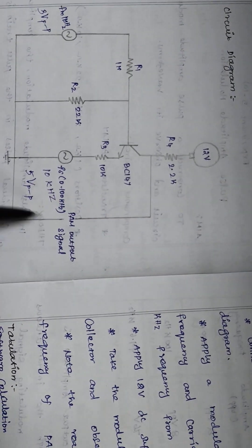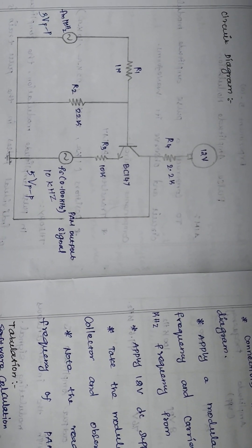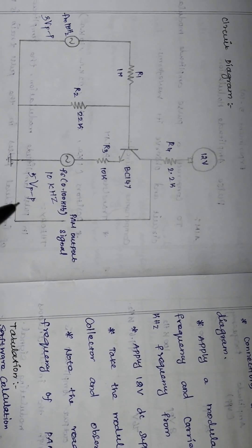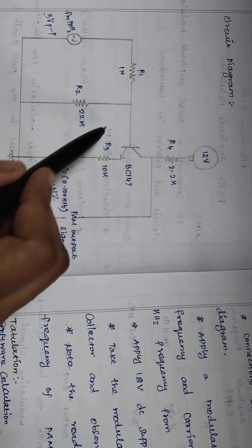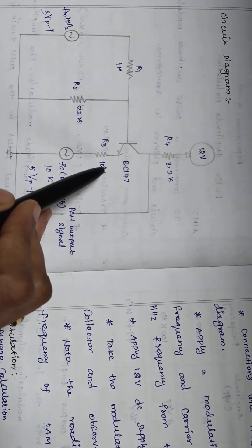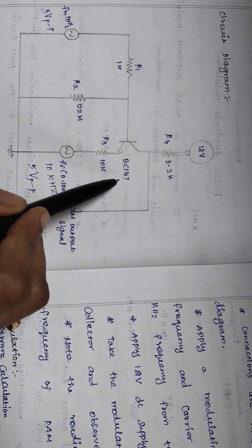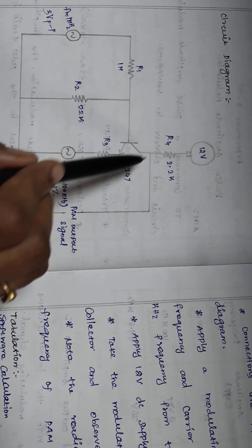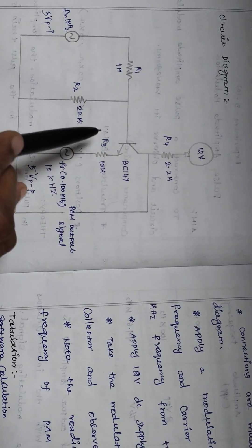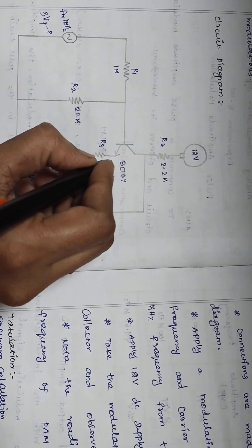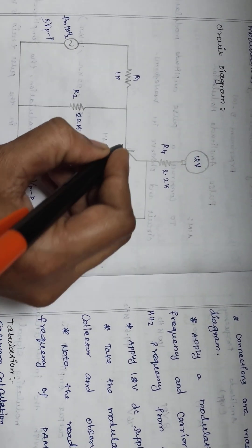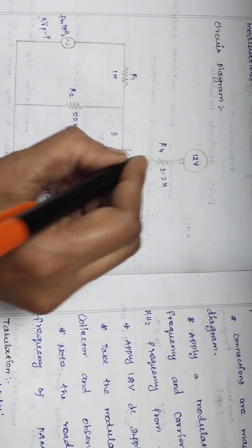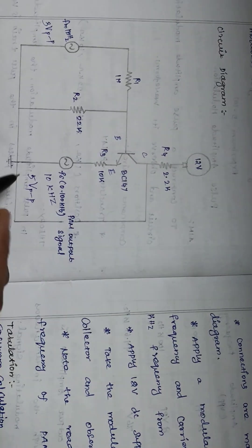The experiment is pulse amplitude modulation. In this, we are going to use the BJT BC147 NPN transistor. We have the emitter, base, and collector terminals.